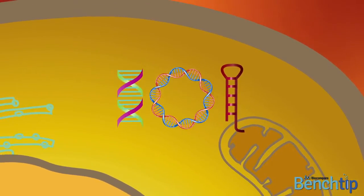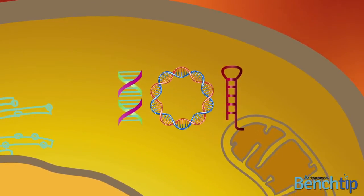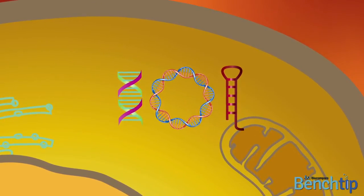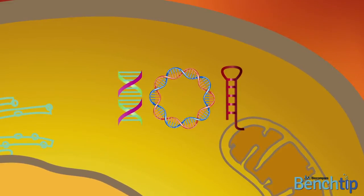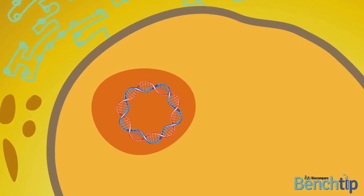This is due to the size charge difference between smaller nucleic acids and plasmid DNA, in addition to the different subcellular locations for their activity, cytoplasm for siRNA and microRNA versus nucleus for plasmid DNA.